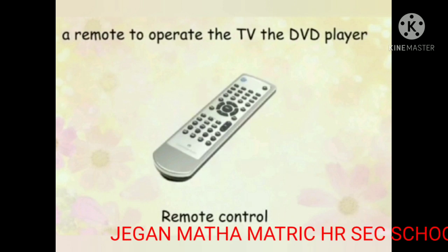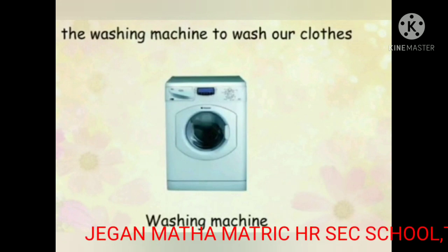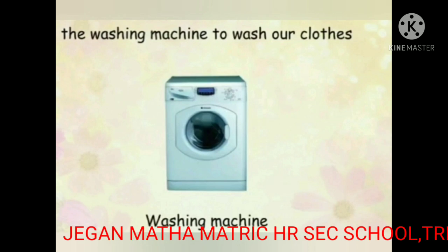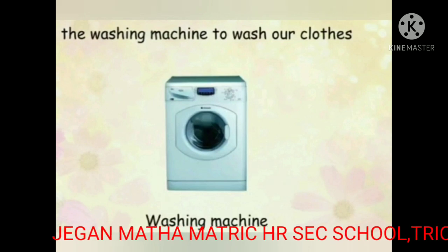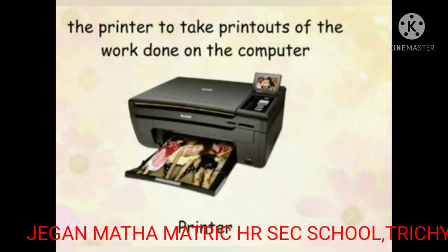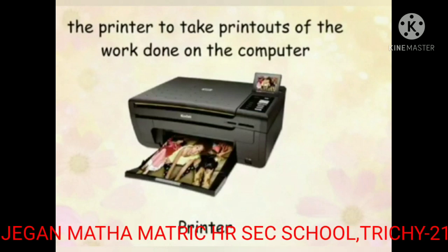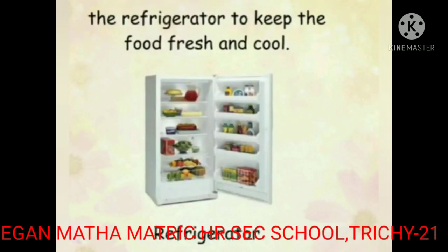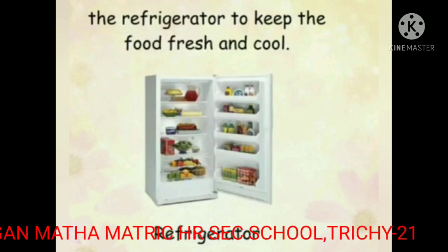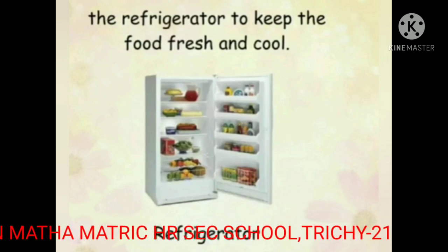Remote control. This is the remote control. The next one: the washing machine to wash our clothes. Washing machine. The printer to take printouts of the work done on the computer. This is a printer. The refrigerator to keep the food fresh and cool.